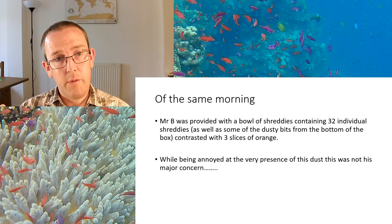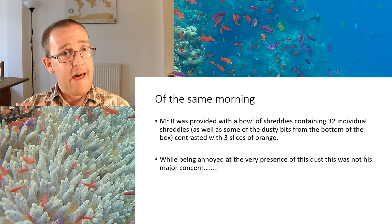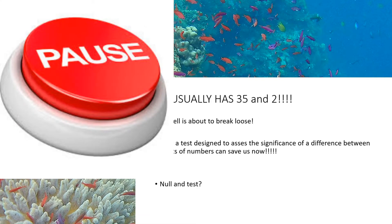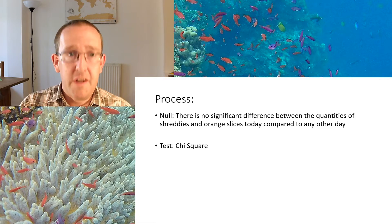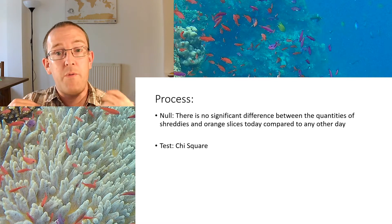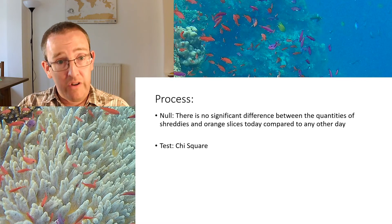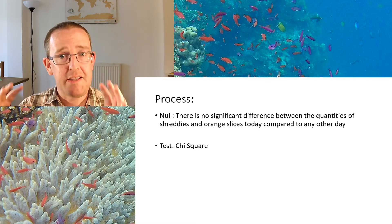We've got shreddies, we've got oranges, and we've got two sets of numbers. You've got the category of shreddies, the category of oranges, a number he observed in his breakfast, and the number he expected. Pause and write a null. The null is something like: there's no significant difference between the quantities of shreddies and orange slices today compared to any other day — no statistically significant difference between the observed breakfast and the expected breakfast. We can also say we're 95% confident we are not seeing a significant difference. The test is of course the chi-squared test, looking at frequencies of things in categories.